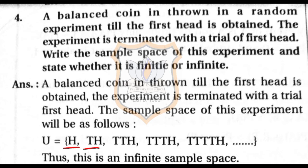If you get two tails before the first head, the outcome is TTH. You could also get TTTH, TTTTH, and so on. Since there are possibilities of getting head in the first trial, second trial, third trial, fourth trial, and so on, this experiment can continue indefinitely. Therefore the sample space is called an infinite sample space.